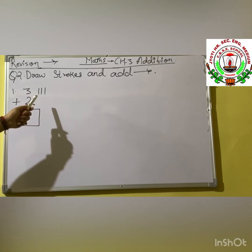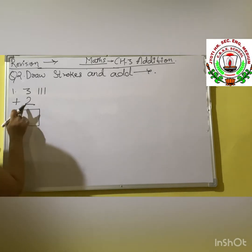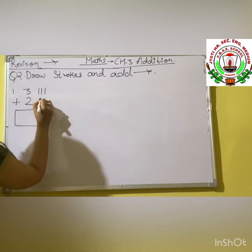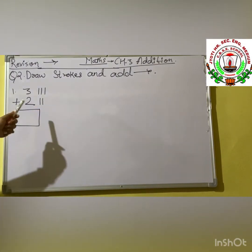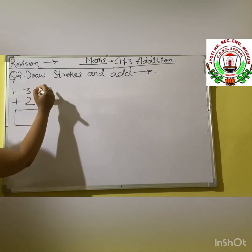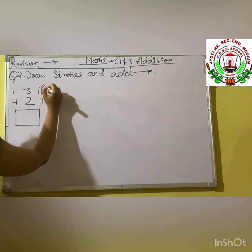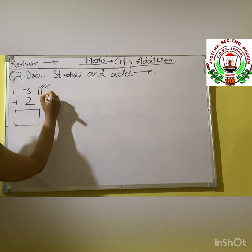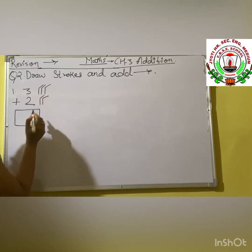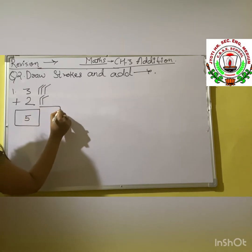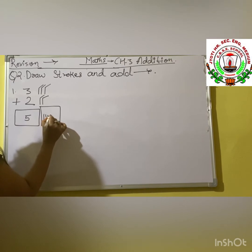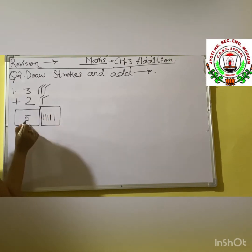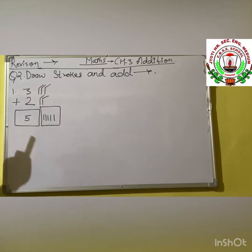Hope you all are understanding this. Now here is the second number: 2. So we draw 1 and 2. Shall we count together? 1, 2, 3, 4 and 5. So here we are having our answer — 5.